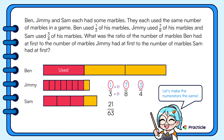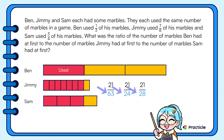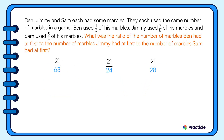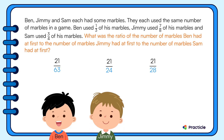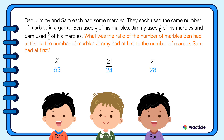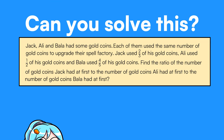Let's find the equivalent fraction of each of these fractions with a numerator of 21. One-third is the same as 21 out of 63. Seven-eighths is the same as 21 out of 24. And three-quarters is the same as 21 out of 28. These denominators tell us the total number of units each boy has. Ben has 63 units, Jimmy has 24 units, and Sam has 28 units. So the ratio of Ben's marbles to Jimmy's marbles to Sam's marbles is 63 to 24 to 28.